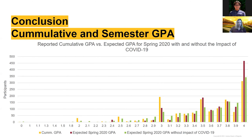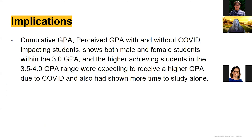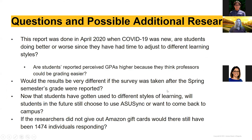Going back to cumulative GPA: data from the survey shows both male and female students in the 3.0 and 3.5 to 4.0 GPA ranges expected to receive a higher GPA due to COVID, having more individual study time. This was definitely interesting. However, since this survey was done in April — COVID-19 being brand new, everyone had switched over in just one month — my curiosity for future research is whether students will do better or worse now that they've had time to adjust to different learning styles.